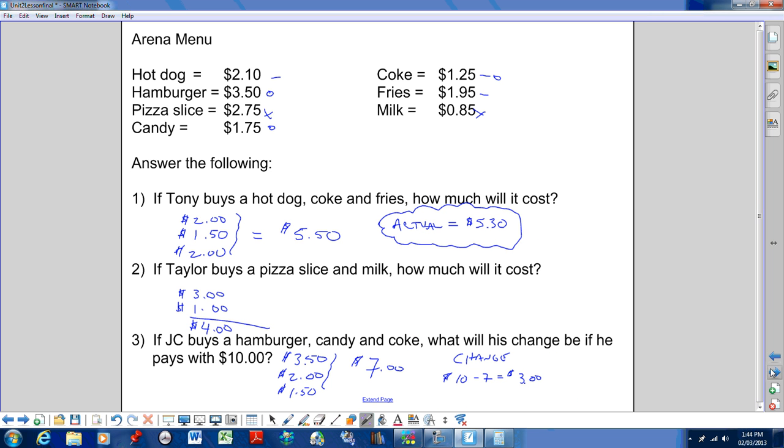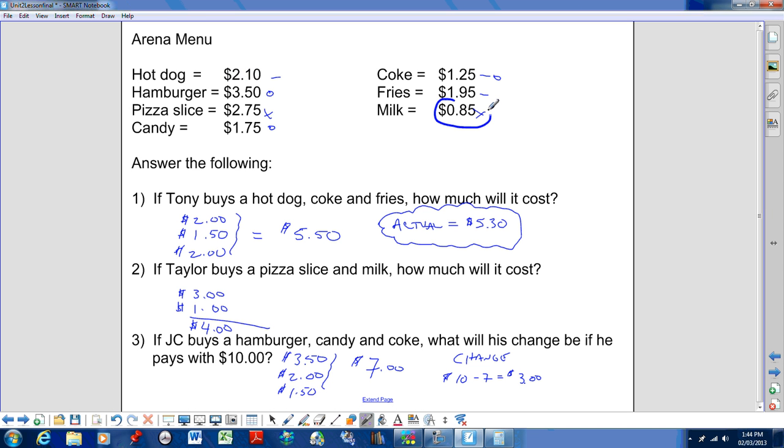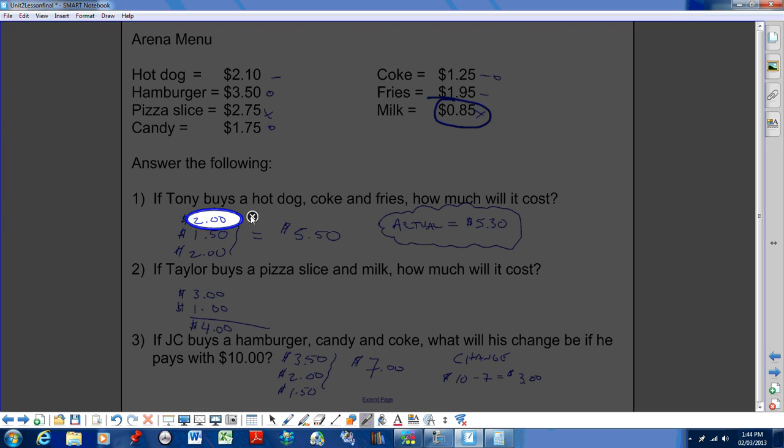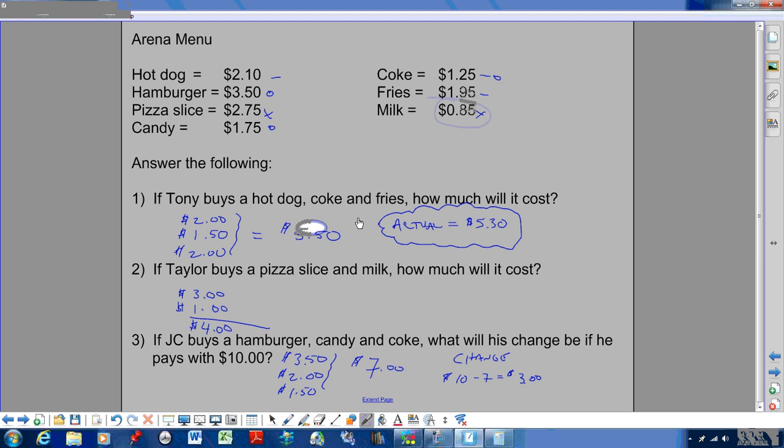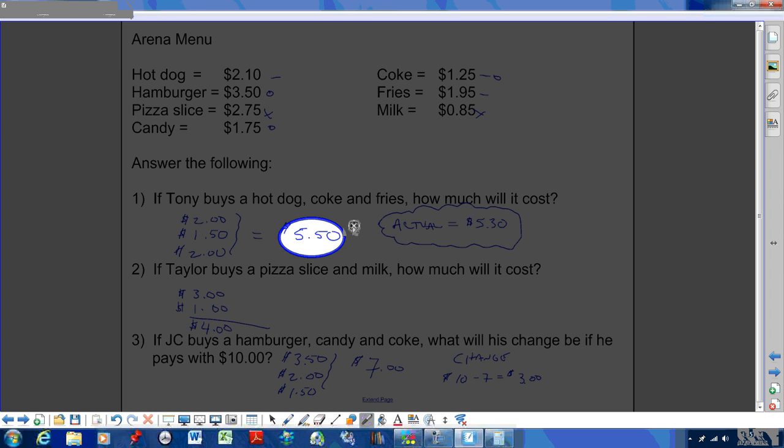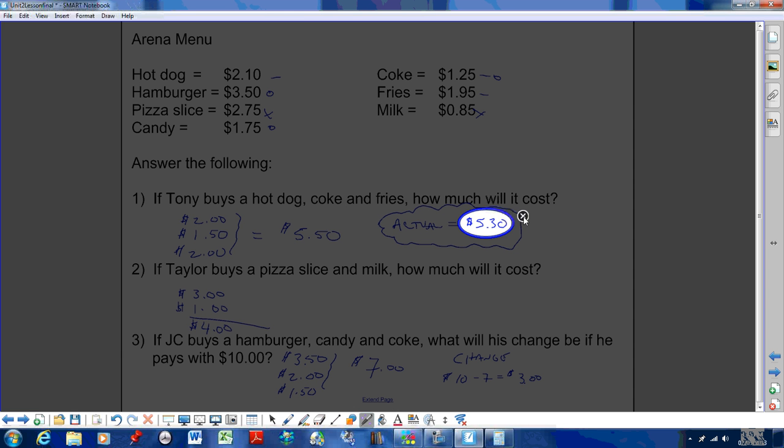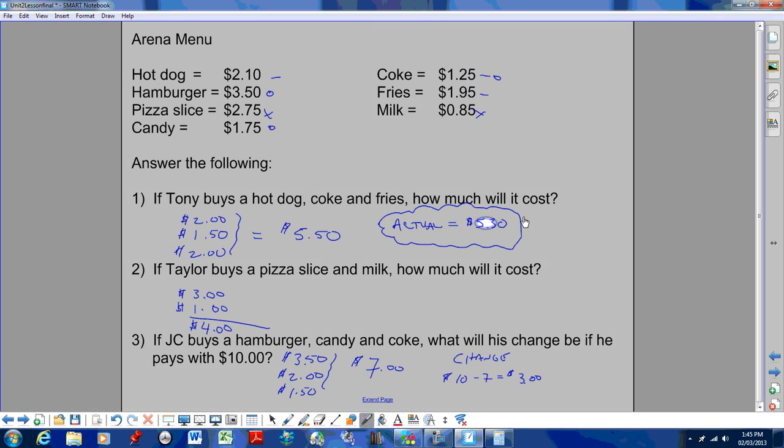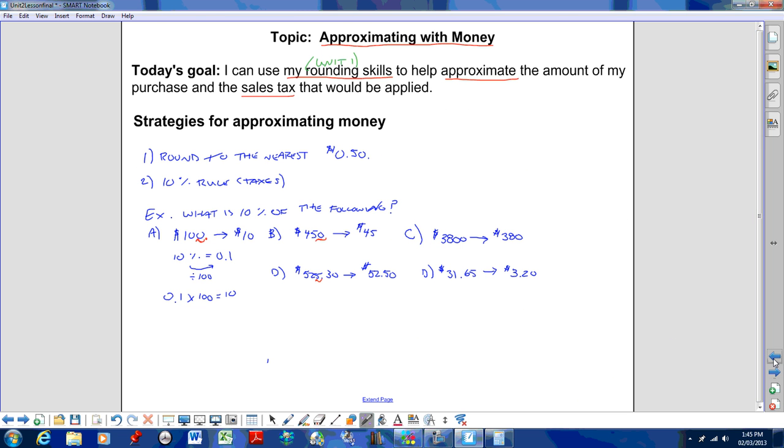So then I talked about being at the arena. Rather than sitting there trying to add funny numbers together, you round to the nearest dollar instead, and it gives you an approximate value. For that first example, we said Tony would have to pay approximately $5.50. The actual was $5.30. So if Tony had $5.25 out, he was pretty darn close. So approximating allows us to get further close.